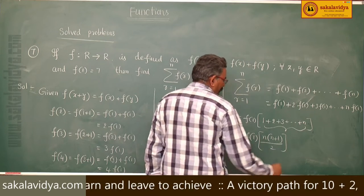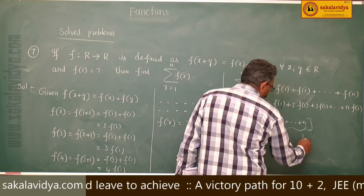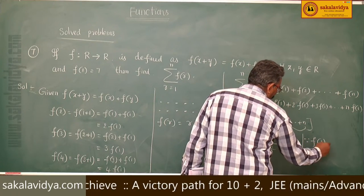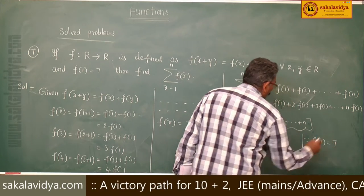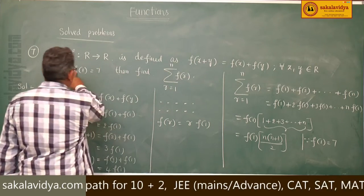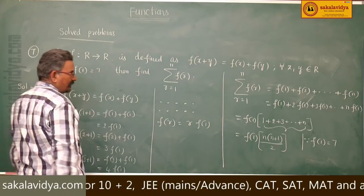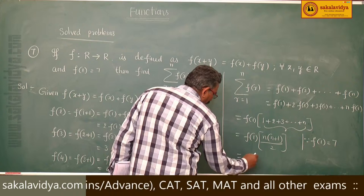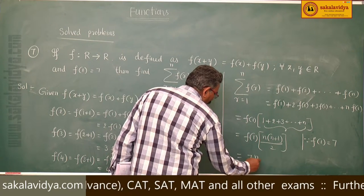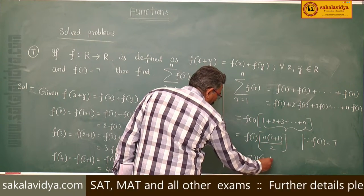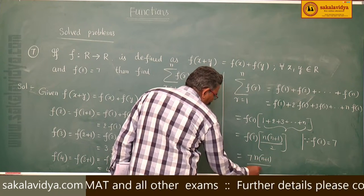But f of 1 is already defined as equal to 7 in the problem. So the final answer is 7 times n times n plus 1 divided by 2.